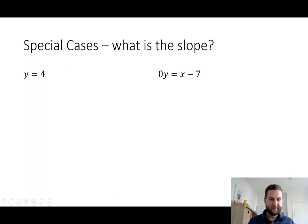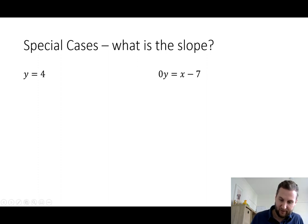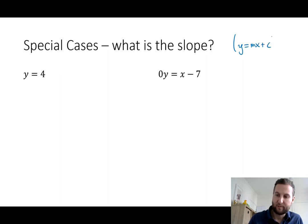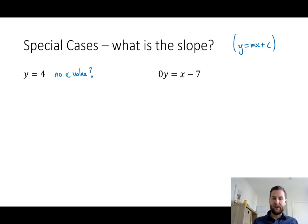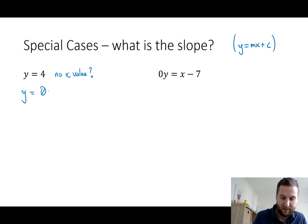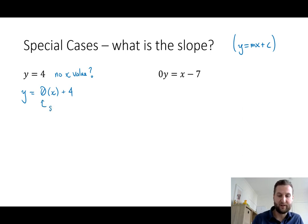Let's look at two special cases. If we're looking at these equations, what is the slope? We might be thinking back to y equals mx plus c — well, where is the x? This first one has no x value. In actually you could say it does have an x value but it's just zero, so we could say something like y equals zero times x plus four, and then we've manually created our slope value here.